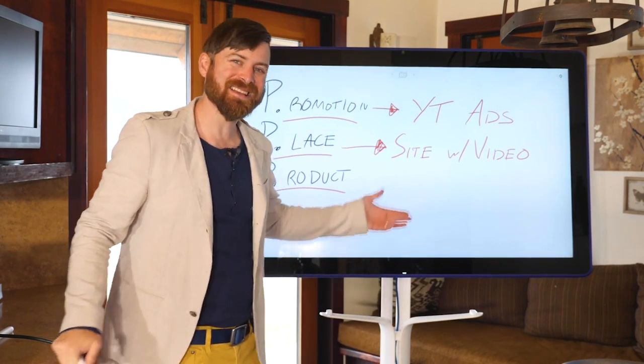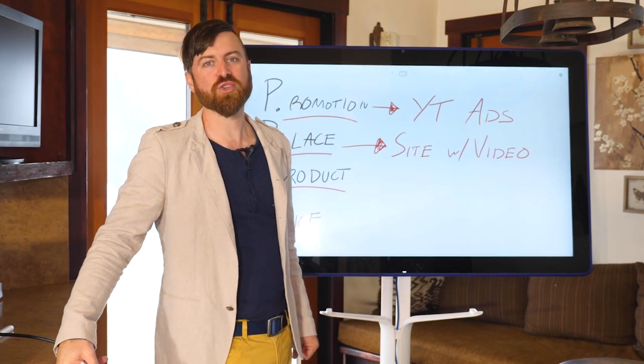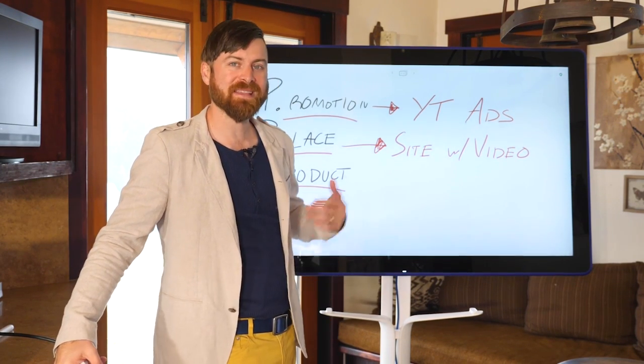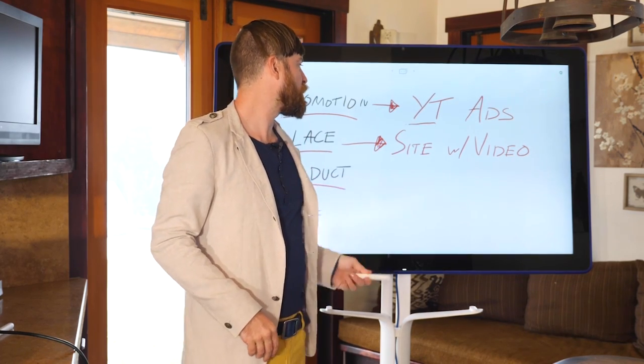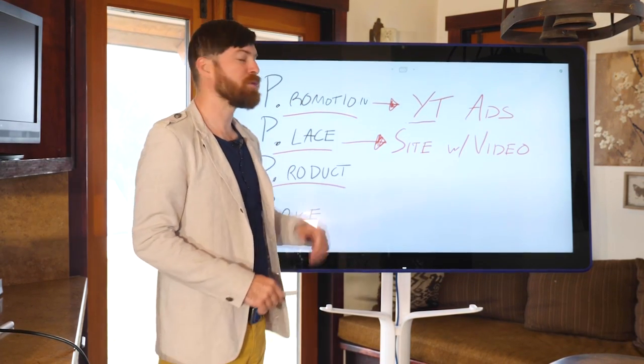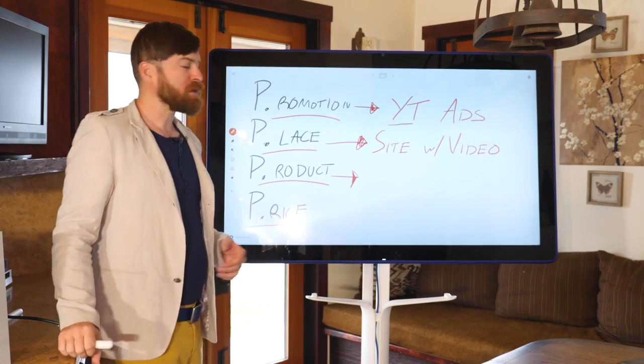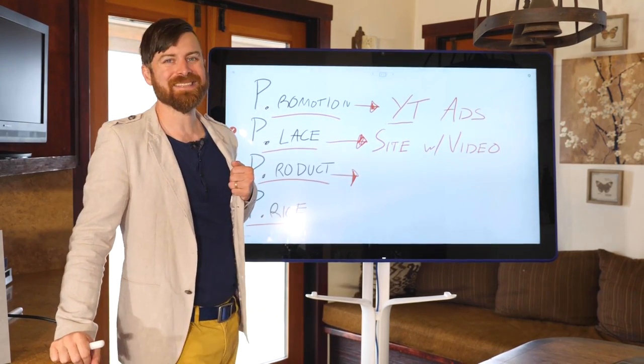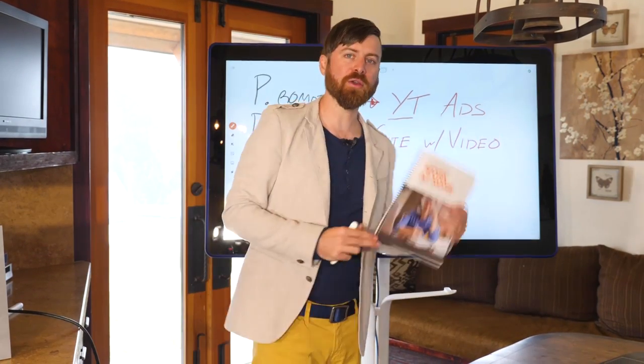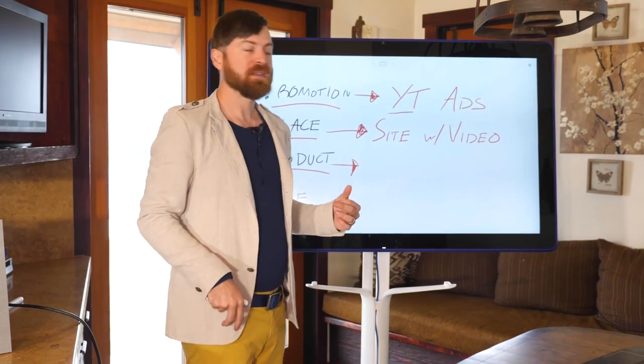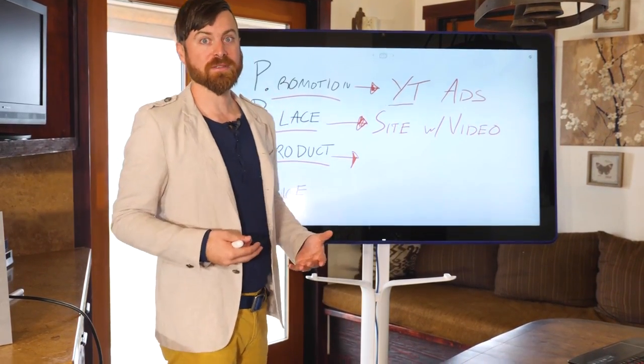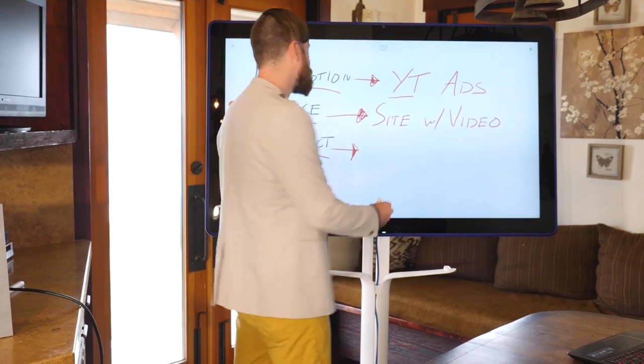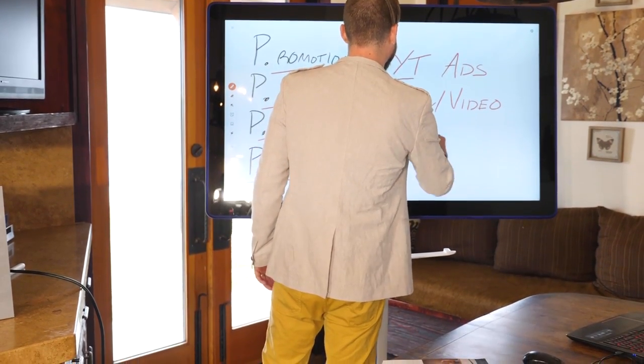If you are sending people to a website that doesn't have video, you're probably not going to do as well as if you sent them to a website that has videos on it. Because people coming from YouTube, the promotional element, like video just by the nature of where they're coming from. What sort of product would people like to see on YouTube? A book or a video training course? In YouTube's case, if the person is coming from YouTube, they're probably going to want to see a video training course because people are watching videos on YouTube. So the product is a video course.